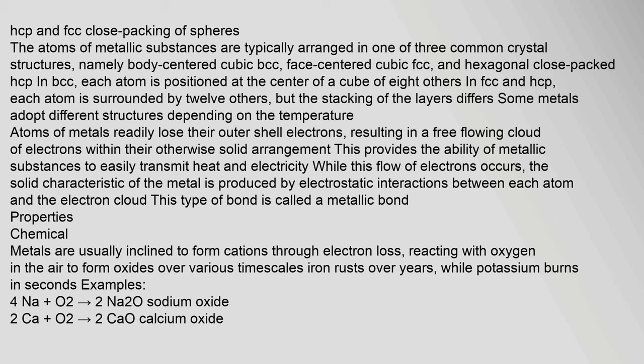Some metals adopt different structures depending on temperature. Atoms of metals readily lose their outer shell electrons, resulting in a free-flowing cloud of electrons within their otherwise solid arrangement. This provides metallic substances the ability to easily transmit heat and electricity. The solid characteristic of the metal is produced by electrostatic interactions between each atom and the electron cloud — this type of bond is called a metallic bond.